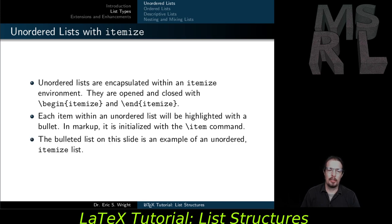Unordered lists are encapsulated within an itemize environment. They are opened and closed with begin itemize and end itemize. Each item within an unordered list will be highlighted with a bullet. In markup, it's initialized with the item command. The bulleted list on this slide is an example of an unordered itemized list.